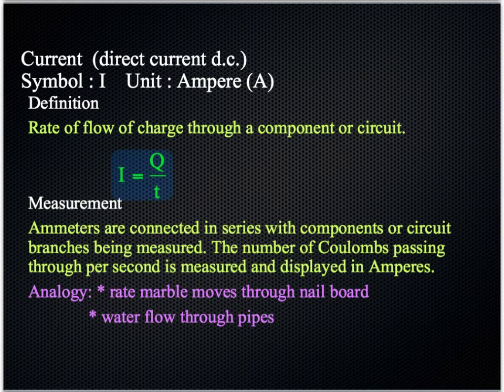The second concept you need to understand is current. The symbol is I. The unit is the ampere. The short version is the amp. The symbol is capital A. The definition of current is simply the rate of flow of charge. Now even just those five words there would be enough. But logically we're talking about through a component or a circuit. That's where the charges are flowing. The equation here logically is the same thing as the statement above. Current I equals the charge per second. The rate of flow of charge.